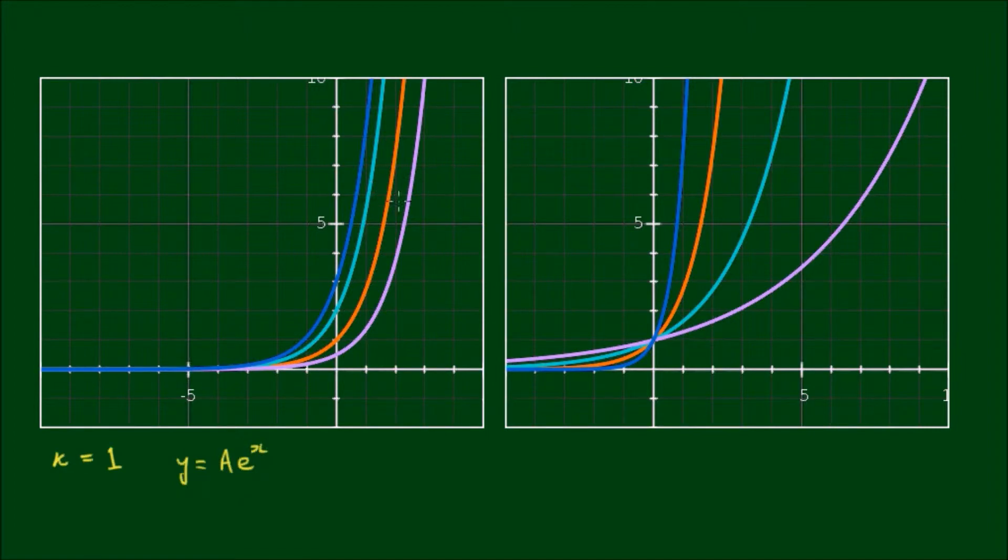The curves represent different values of A. This orange curve here is when A equals 1, this light magenta curve is when A equals 1/2, the cyan curve is when A equals 2, and the blue curve is when A equals 3.